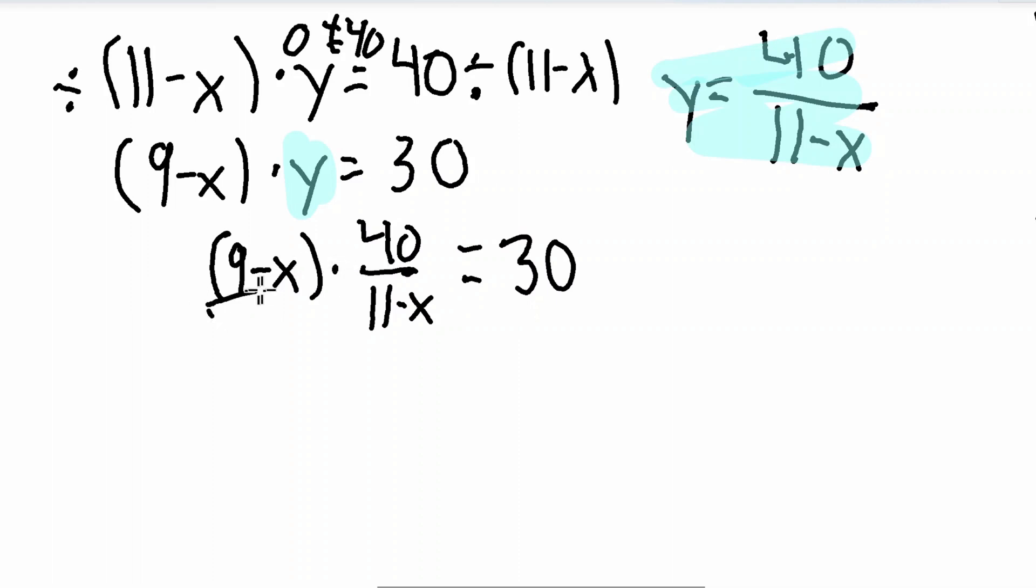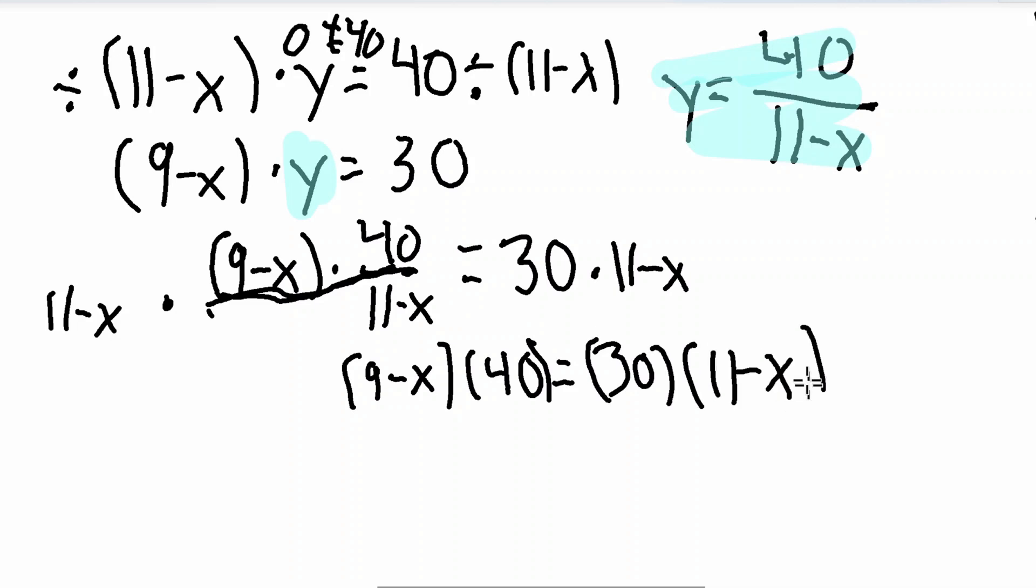So now these two are being multiplied together, so we can just put them all on top. And now, how do we want to get rid of the 11 minus x on the bottom? We want to multiply on both sides by 11 minus x to get rid of that. Notice how we only have x terms left in our equation, which is good, so we can solve for x by itself now. So I multiply by 11 minus x on both sides to get rid of the denominator here, and that will give me 9 minus x times 40 is equal to 30 times 11 minus x.